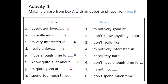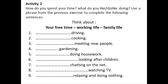H: 'I spend too much time' doing something — the opposite is number 8: 'I don't spend much time.' Now Activity 2: how do you spend your time? What do you like and what do you dislike doing? Use a phrase from the previous exercise to complete the following sentences about your free time, working life, and family life.